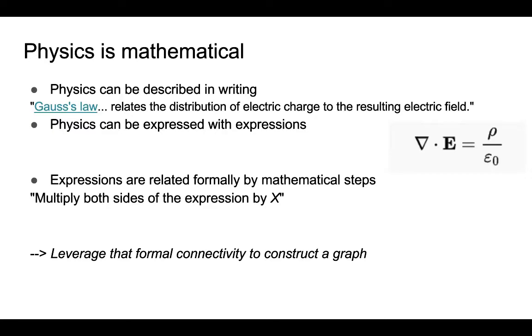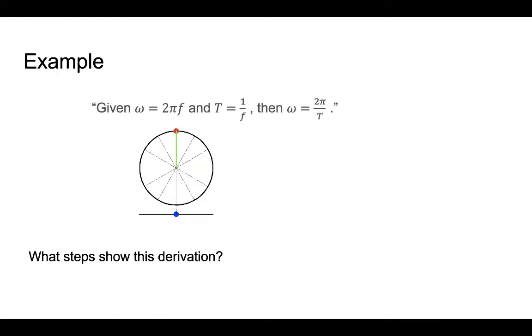In this presentation I'm going to focus on building on that concept but specific to the domain of physics. Physics has some unique attributes that we can leverage. Specifically, the text description of a concept can often be described using a mathematical expression. That expression is related to other mathematical expressions via a set of mathematical steps. The point of the physics derivation graph project is to document those expressions and steps, forming a graph which can be presented to the interested reader.